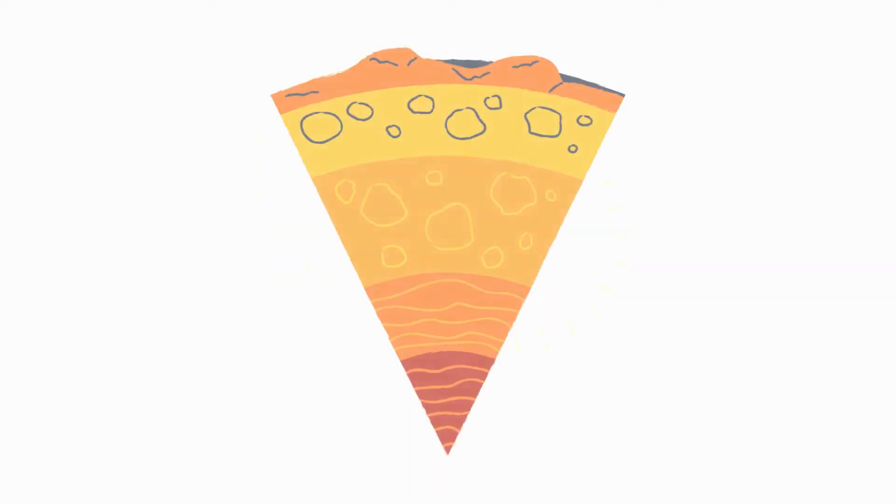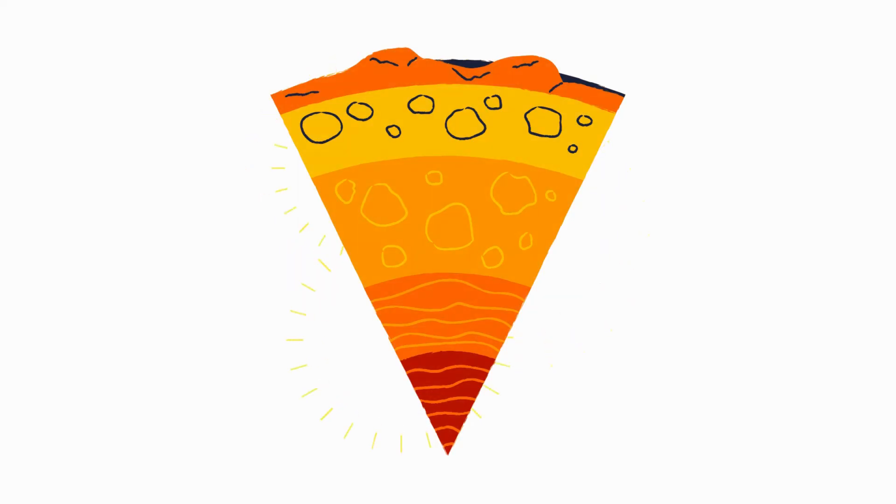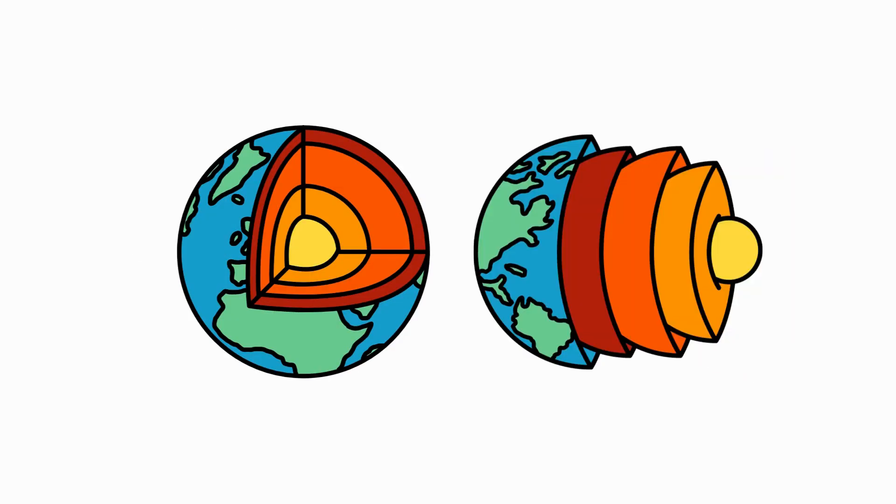Scientists can study how these waves bend, reflect, speed up, or slow down. Based on this, they can determine if something is a solid or a liquid, and how thick it is. This data can then be mapped out and helps us understand what the internal structure of the Earth looks like.